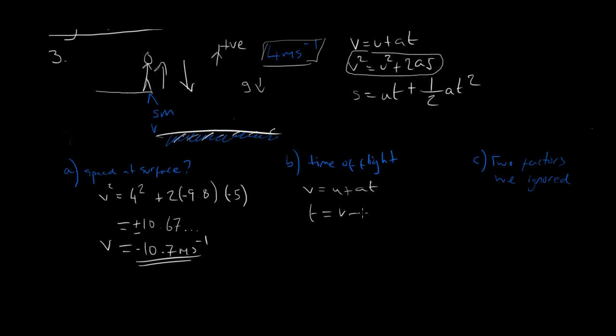So if V equals U plus AT, then T equals V minus U over A. If the final velocity there is minus 10.67, or you know with the rest of the points, minus the initial velocity which is positive 4, and the acceleration is negative 9.8.